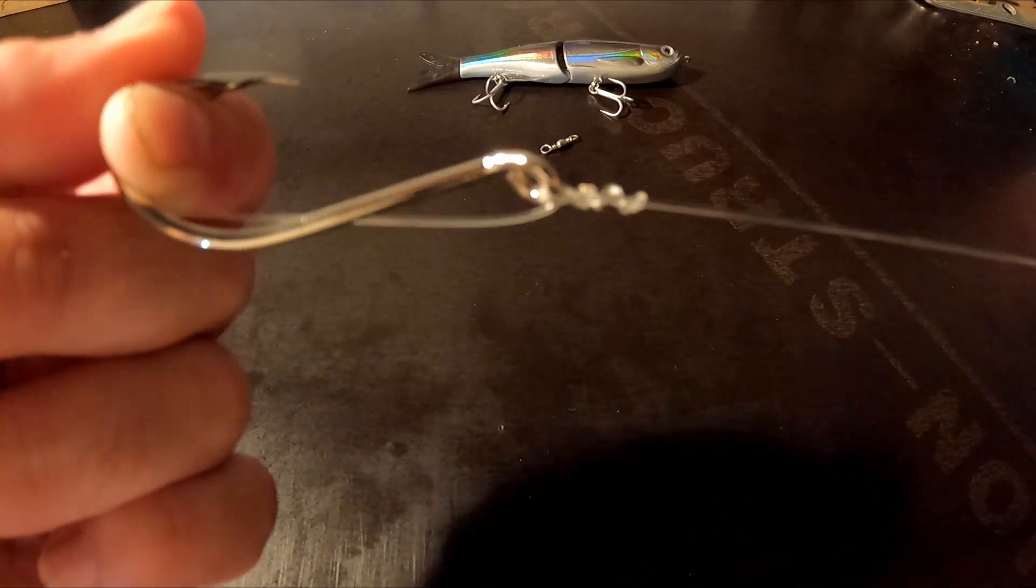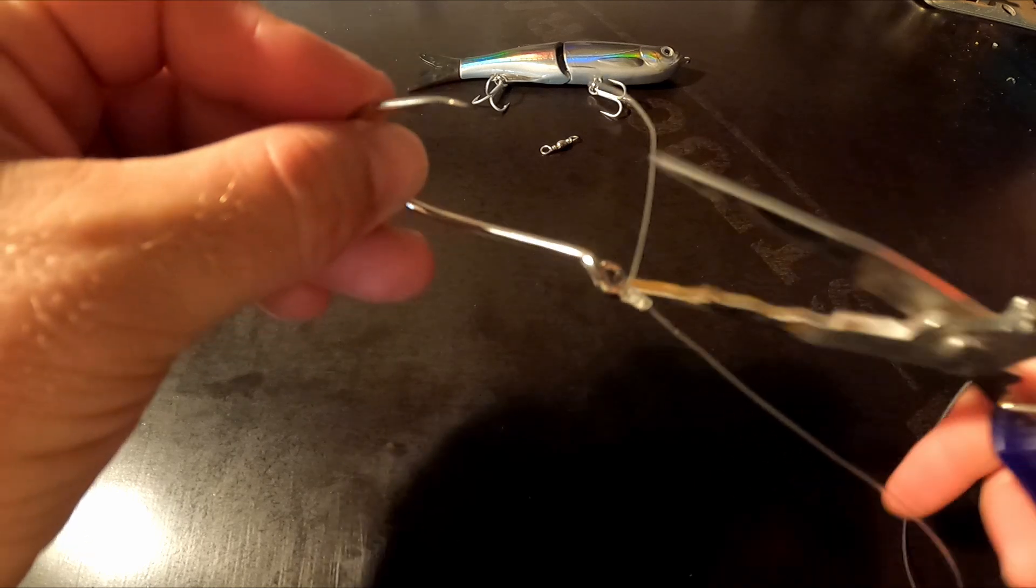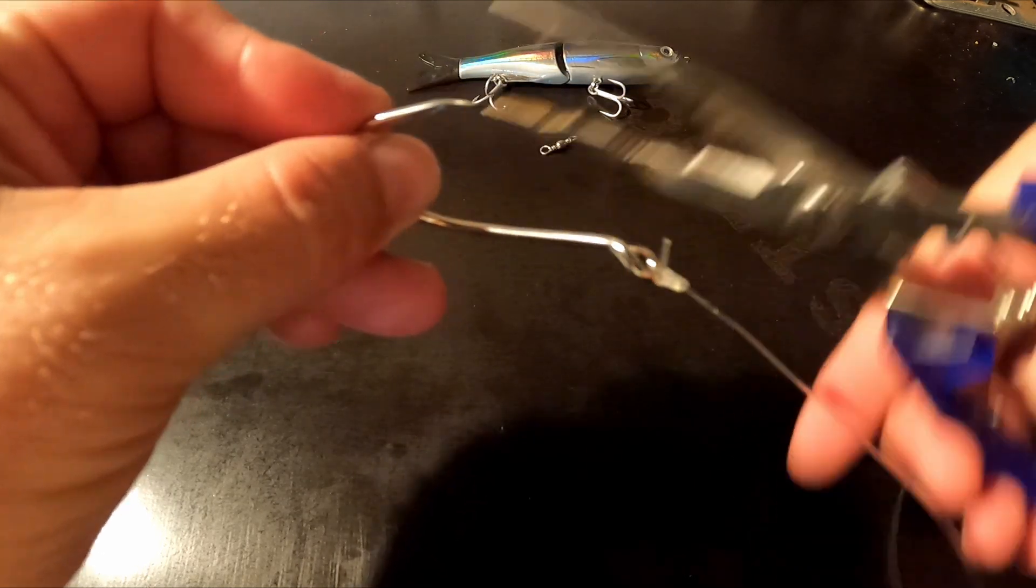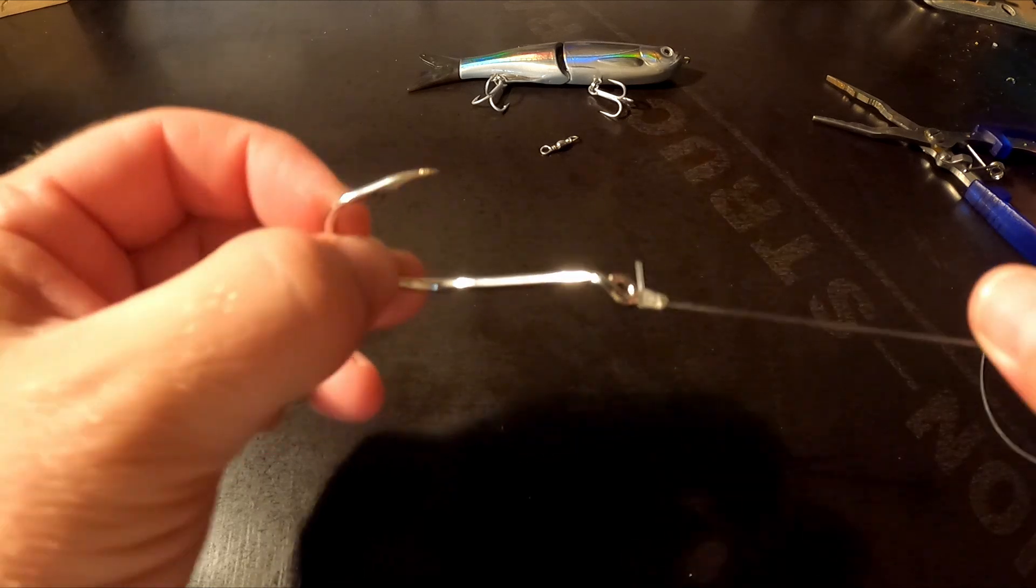So you just tighten and then snip off the tag end. So that's your half blood knot, very straightforward, very strong knot.